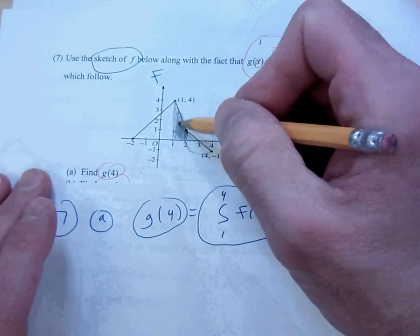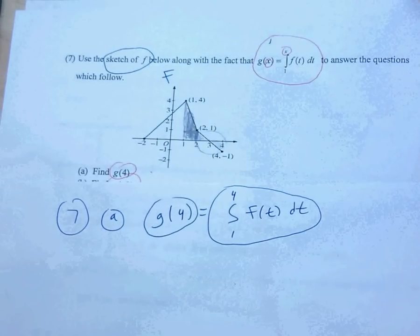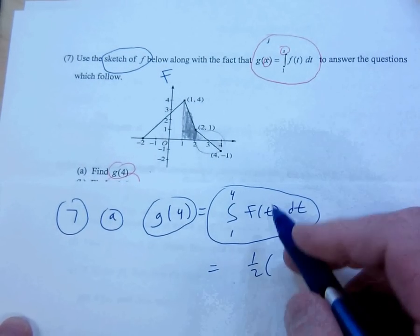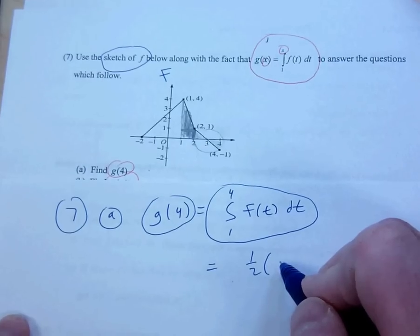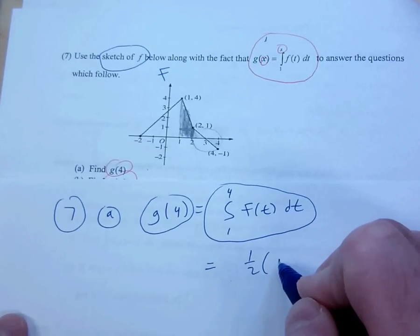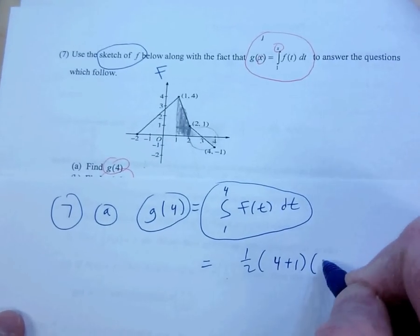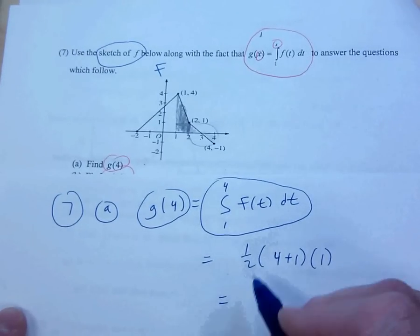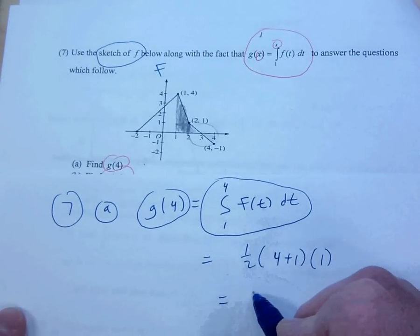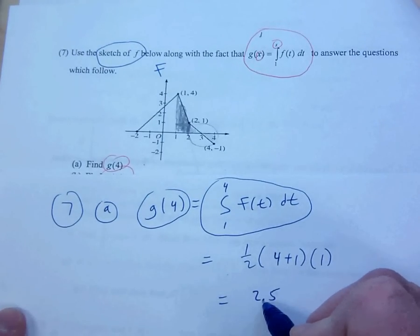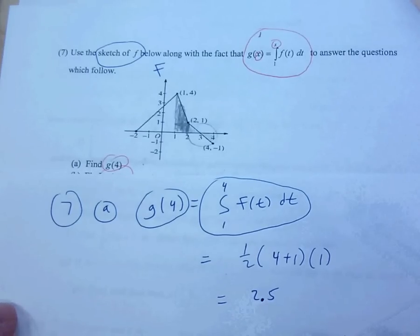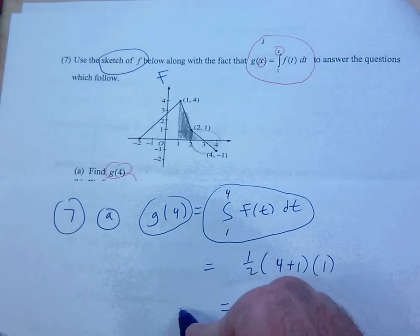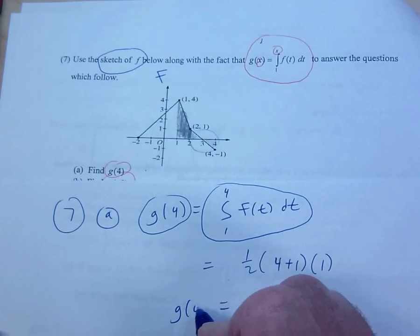That's a trapezoid, or you can split it up into a rectangle and a triangle. The bottom line is I'm just going to use the trapezoid formula. So it's one half times (4 plus 1) times 1, and what does that equal? 2.5. So everybody agree that that's G of 4?